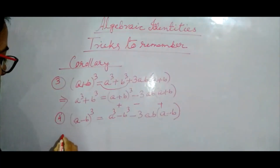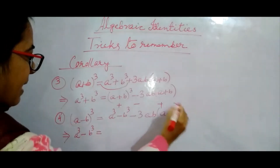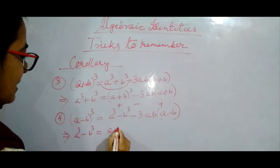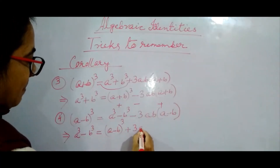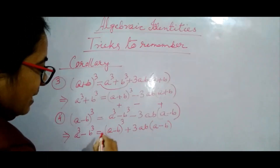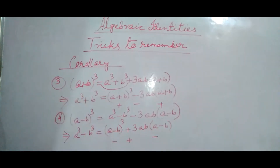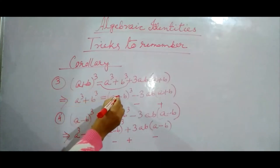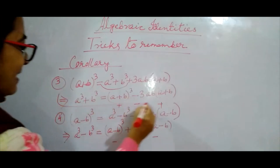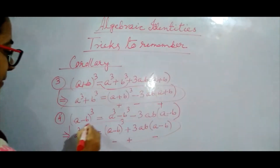Now in some questions you are asked to find A cube minus B cube. From this main identity we can find: A cube minus B cube equals A minus B whole cube plus 3AB into A minus B. You can check: if this sign is minus — first minus, then plus, then minus. Easy to remember. So if this sign is minus: first minus then plus then minus. In this corollary if the sign is plus: first plus then minus then plus. So these are the techniques — very easy techniques.